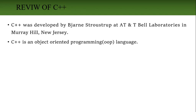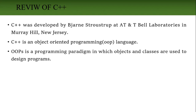C++ is an object-oriented programming language. Object-oriented programming means it is a programming paradigm. Paradigm means it is a methodology in which we are solving the problem — the way or style by which we are solving any problem. OOP is a programming paradigm or methodology in which objects and classes are used to design programs.